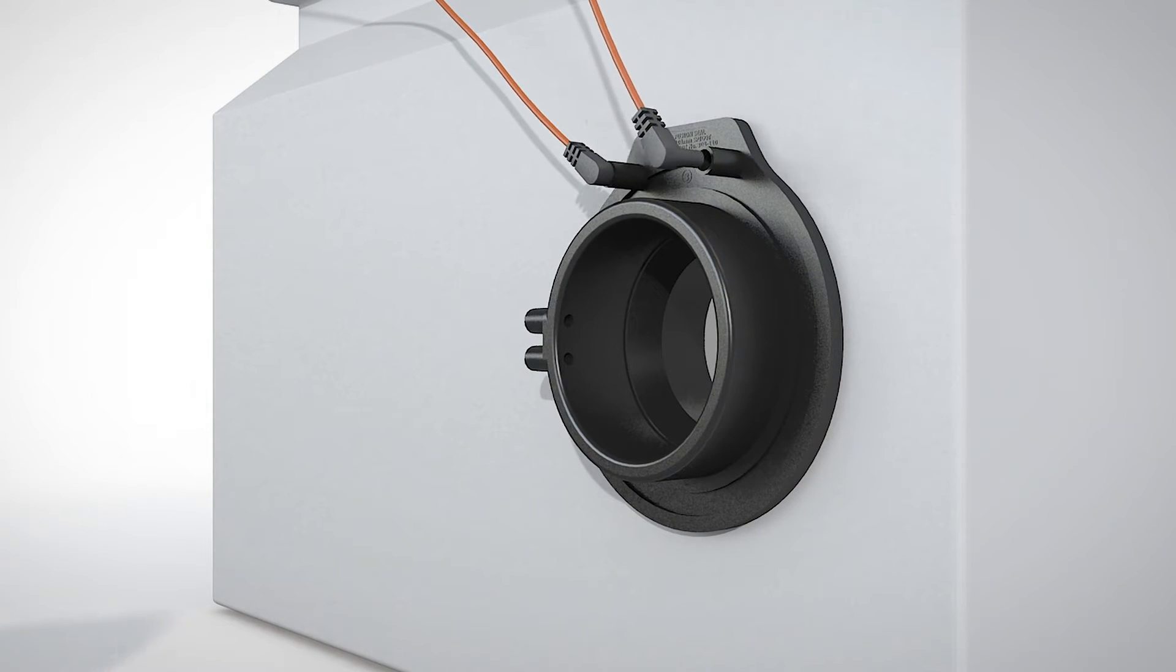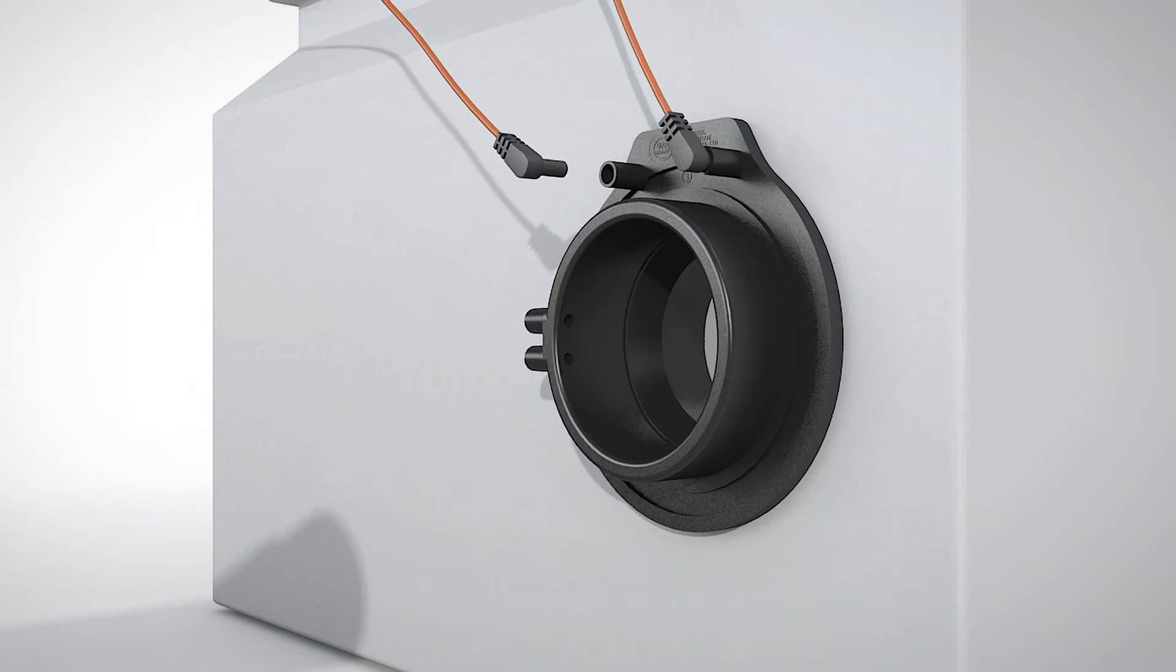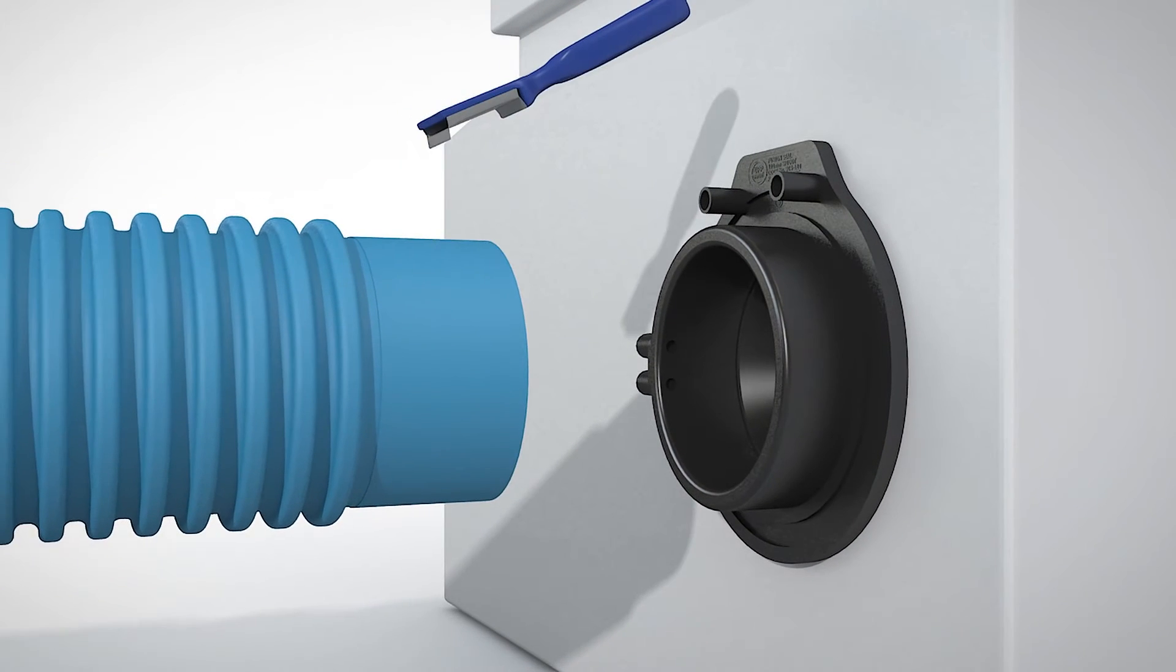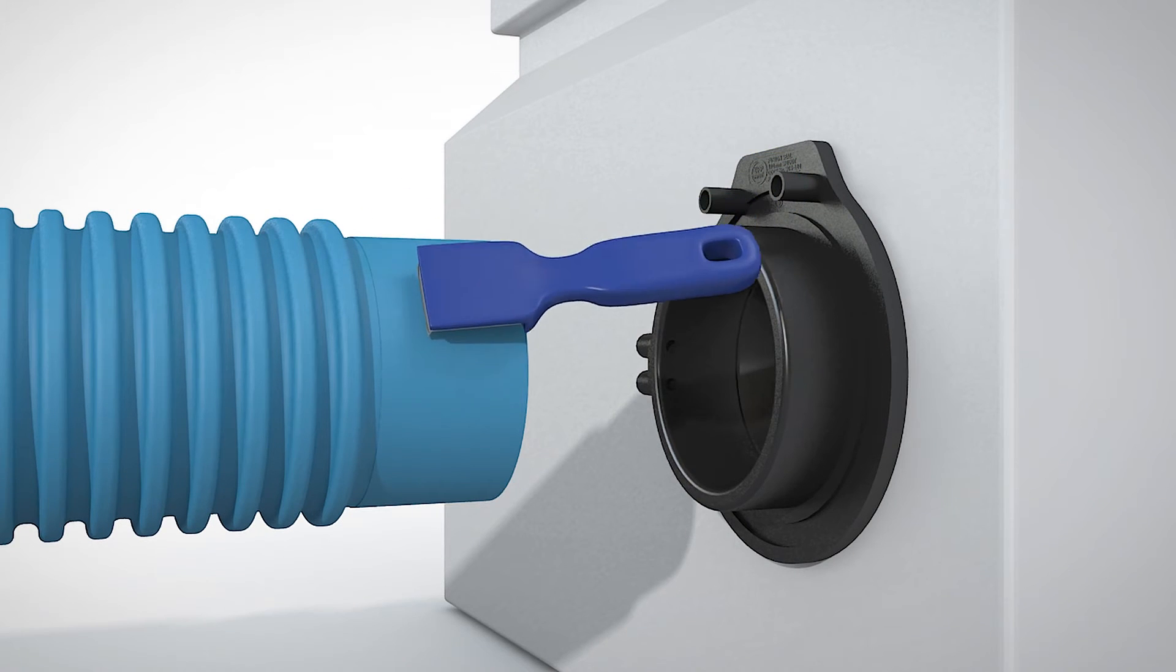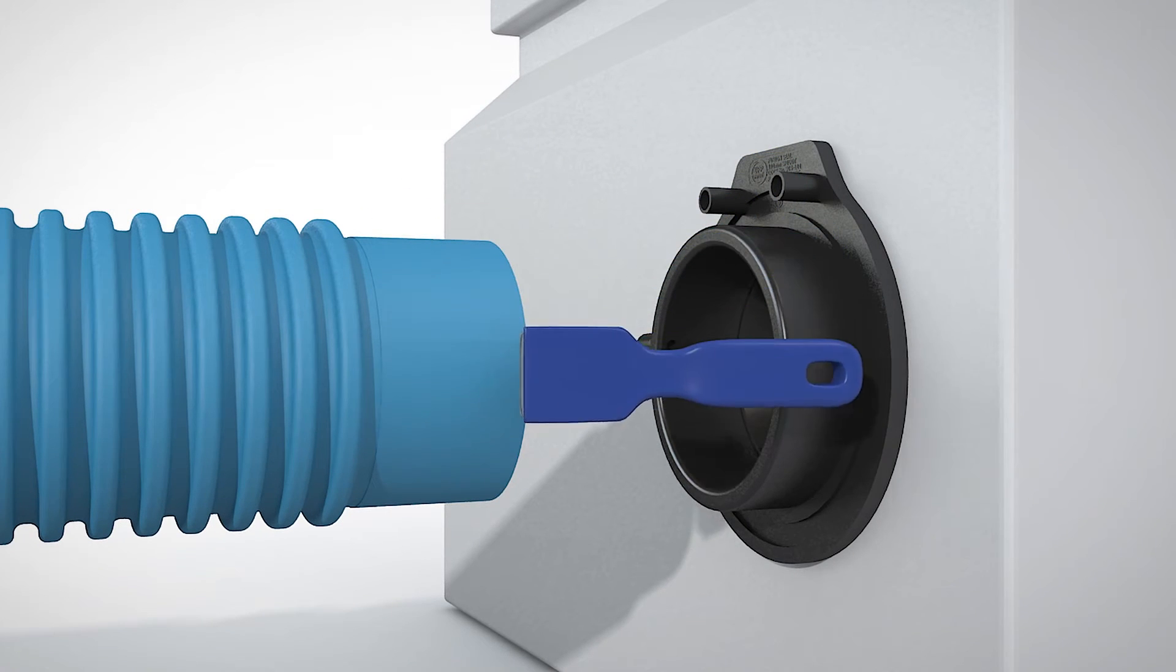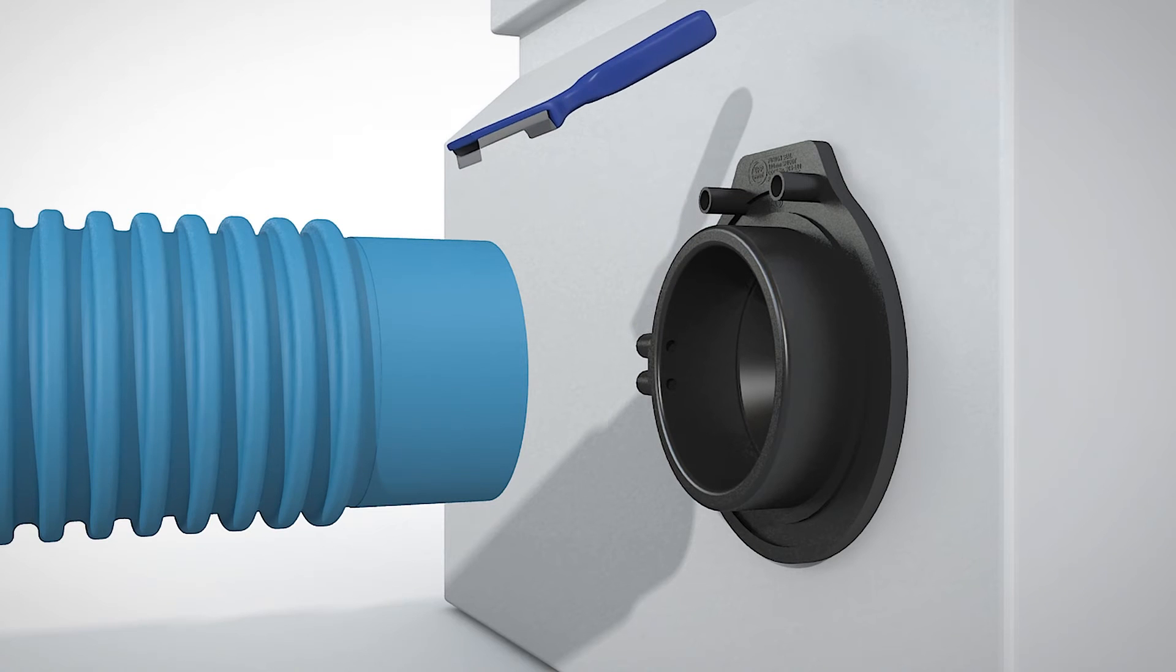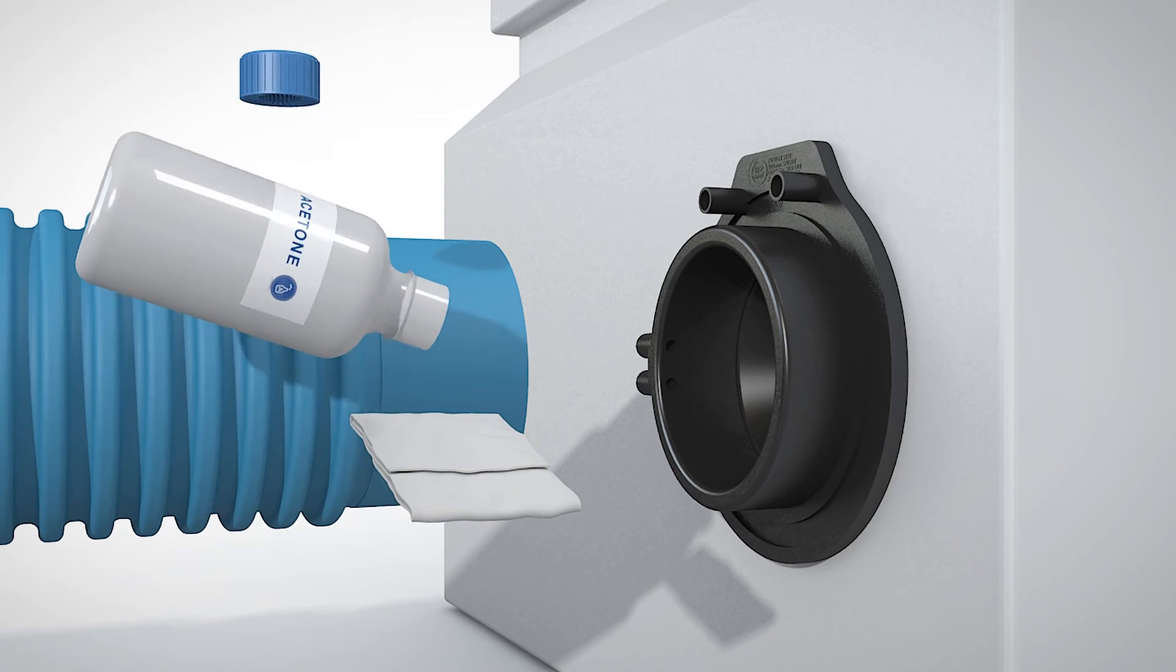Next, you'll bring your ducting and use a simple hand scraper to scrape the outer wall of the ducting. Once you've completely scraped it, you'll bring in acetone.